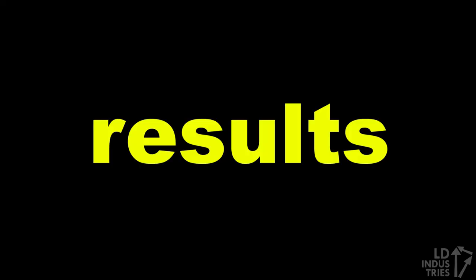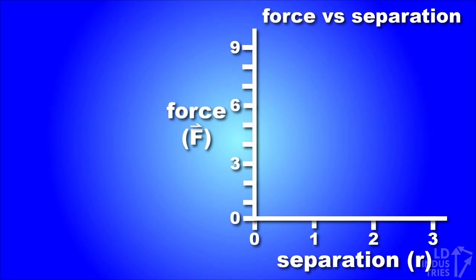So what are the results of these experiments? Both Cavendish and Coulomb graphed the force measured as a function of the separation of the objects, and found a very interesting relationship. As the separation between the objects increased, the force between the objects decreased.